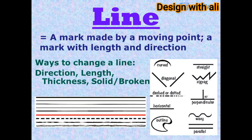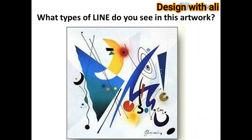Line equals a mark made by a moving point — a mark with length and direction. Ways to change a line include direction, length, thickness, and solid or broken. What types of line do you see in this artwork?